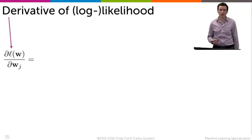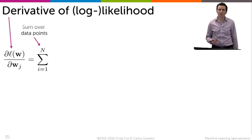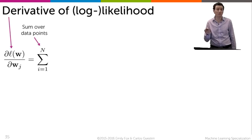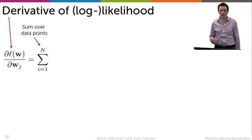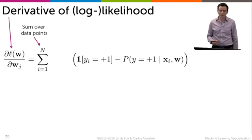Now, the derivative of the likelihood is going to be equal to the sum over the data points. We're going to consider each data point has a contribution to the derivative. Some are going to want to make w_j big, some are going to make w_j smaller. We're going to sum over the data points of the difference